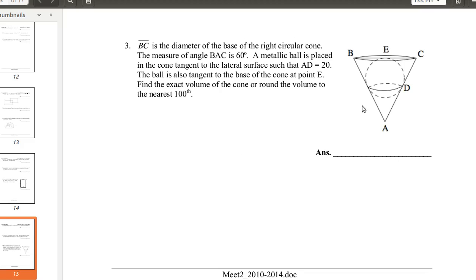BC is the diameter of the base of this right circular cone. The measure of the vertex angle BAC is 60 degrees. A sphere is placed in the cone tangent to the lateral surface, and the lateral surface just means this part of the cone. The base is the circle, and the lateral surface is just this bottom part of the cone that you usually hold when you're eating an ice cream cone.